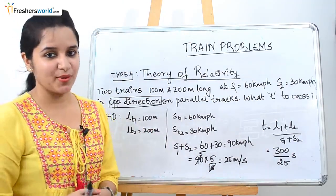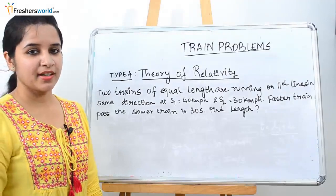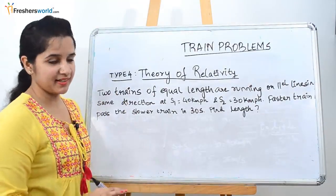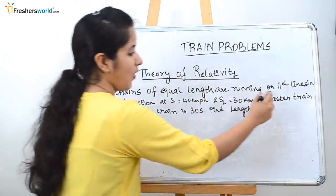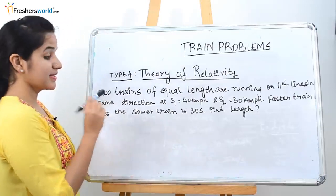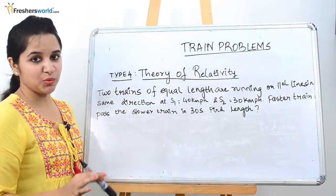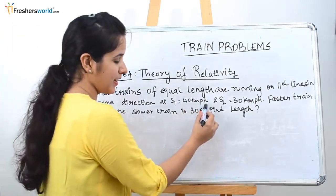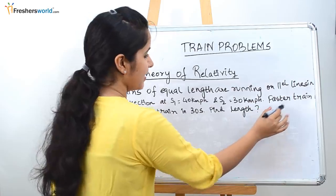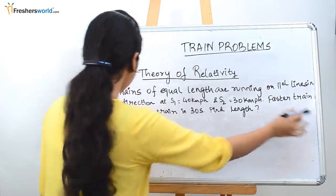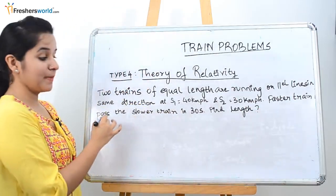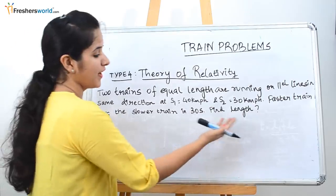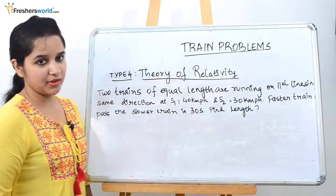Let's go to the next question. Two trains of equal length are running on parallel lines in the same direction with speeds of 40 kilometers per hour and 30 kilometers per hour. The faster train passes the slower train in 30 seconds. Find the length of the train.